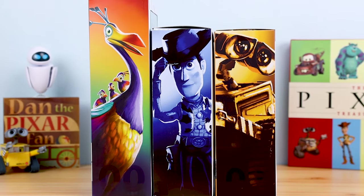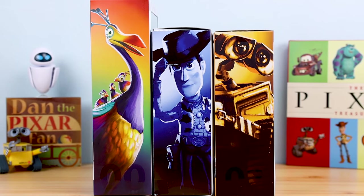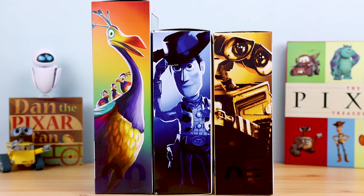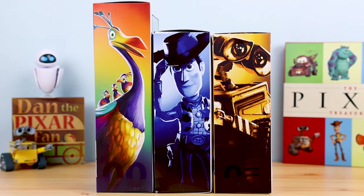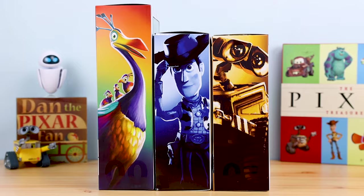And once again, here are all the boxes together. Kevin is number 00, Woody is number 01, and WALL-E again is number 02. Just look at all these colors. No doubt the boxes are display worthy as well.